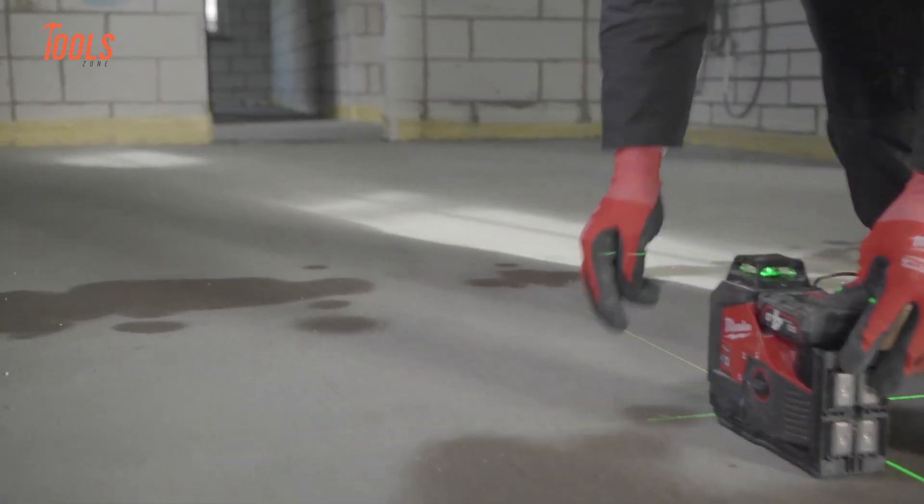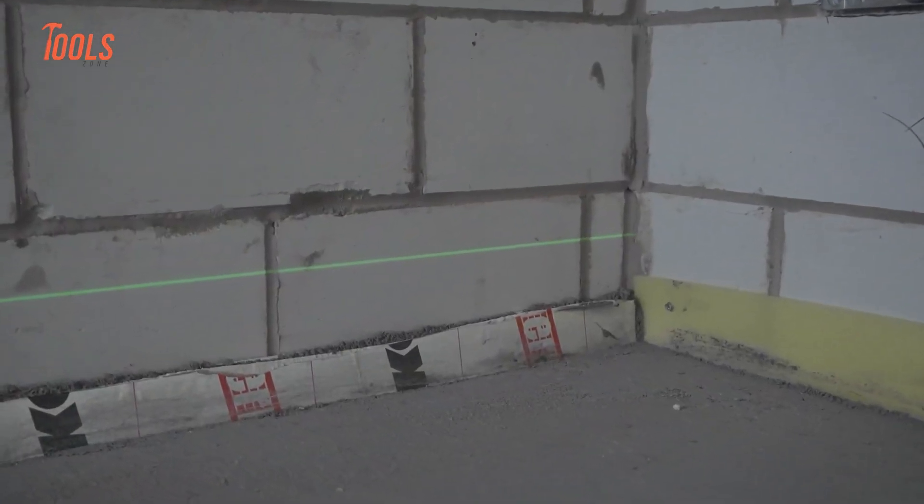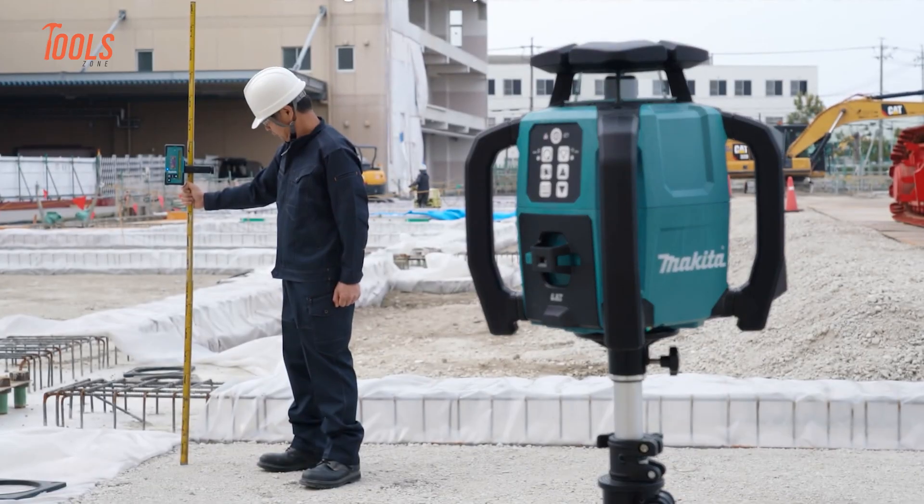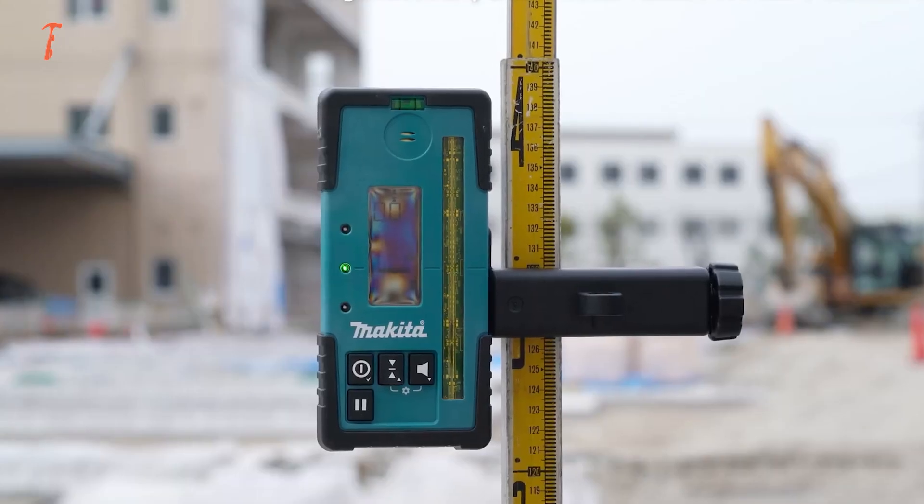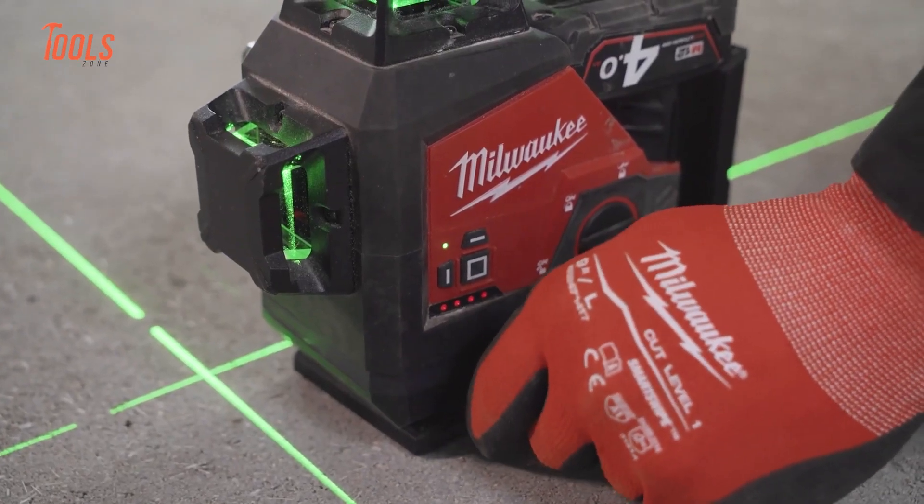On the other hand, a high-end professional model can have an accuracy as tight as ±0.5mm for the same distance. That's a huge improvement. For small indoor tasks, that slight difference might not even matter much.